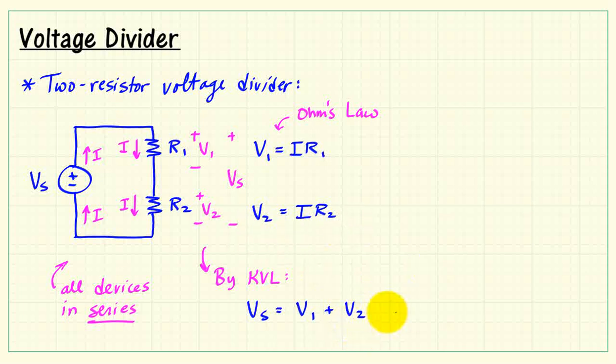Now we have expressions already in place for V1 and V2. I'll drop those in. Observe that I is common to each expression. I'll pull that out front and then solve for the current I. So let me place R1 plus R2 on the other side of the equation.